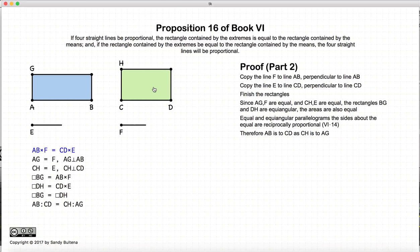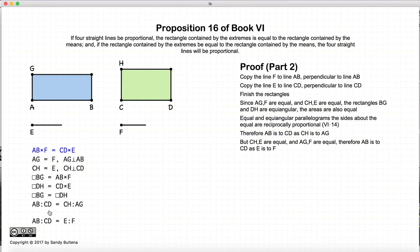When you have any two rectangles that are equal and equal angular, then the sides about these rectangles will be reciprocally proportional — in other words, AB to CD will equal CH to AG. But CH is equal to E and AG is equal to F, so substituting those in, we have that AB to CD is equal to E to F. To restate: we have two rectangles formed by AB and F, and CD and E, and starting with the condition that their areas are equal, the ratio AB to CD will be equal to the ratio E to F. And that's it for this proposition.